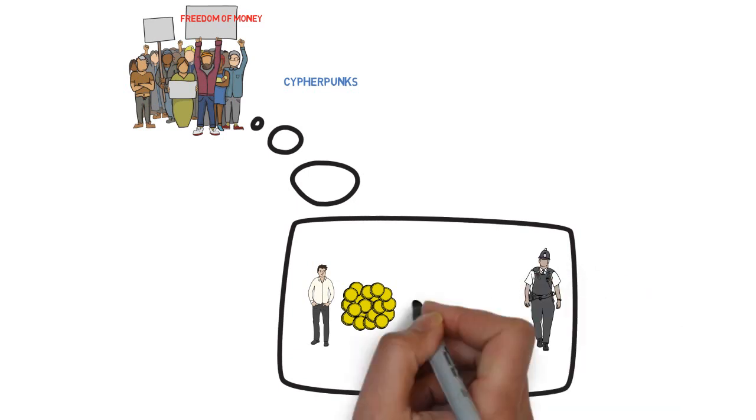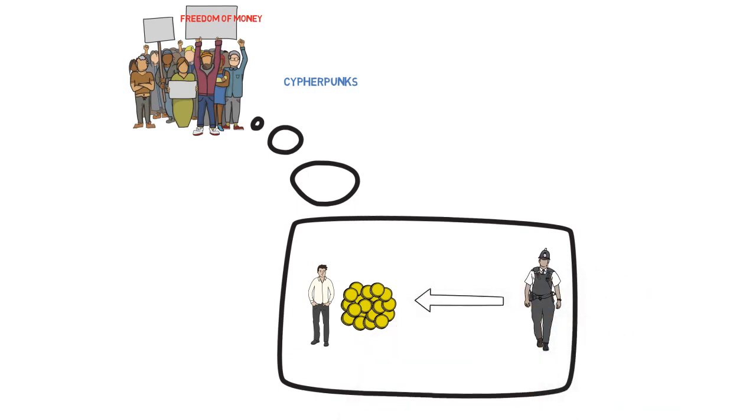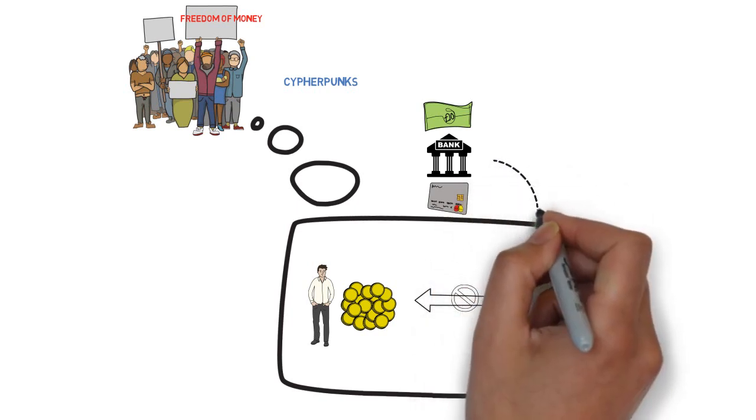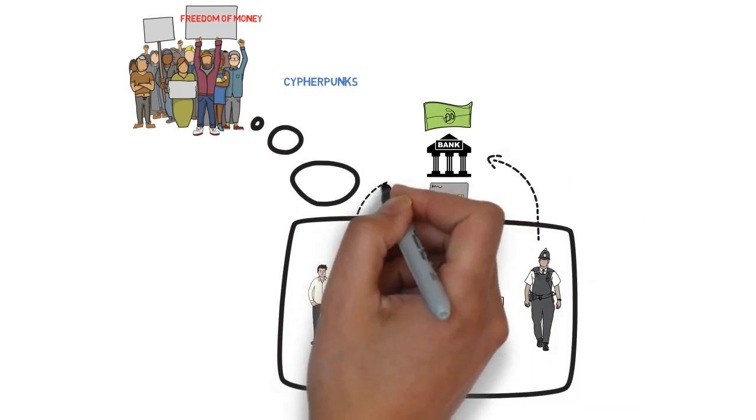Which means government or third parties are unable to trace or survey the financial status. This is a fantastic goal, but very hard to achieve. Because we are living in the physical world, we have to use the local currency, the banking systems, the credit cards. So more or less, our financial status is transparent to the government.